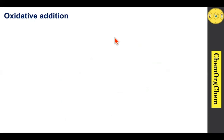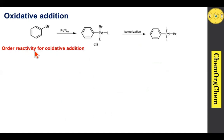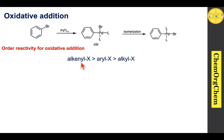For oxidative addition, consider the example of bromobenzene reacting with the palladium(0) complex to produce the corresponding oxidative addition product. Initially a cis complex forms, which isomerizes under reaction conditions to produce the trans complex. Regarding the order of reactivity, in the series of alkenyl, aryl, or alkyl halides, alkenyl halide reacts faster compared to alkyl halide.